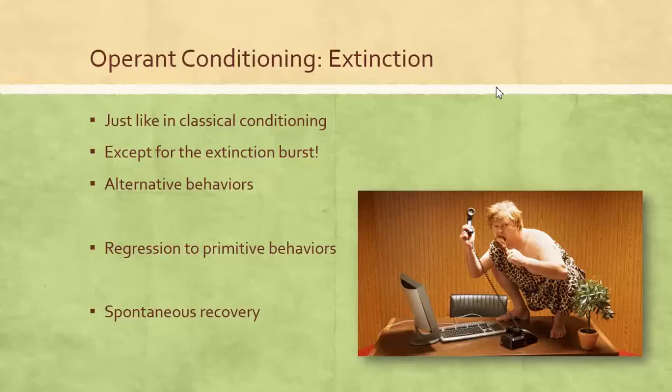Now we're going to talk about some interesting occurrences in operant conditioning, and those are that things that are trained can be untrained. This actually occurs in classical conditioning as well. Extinction and the idea of spontaneous recovery.